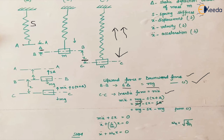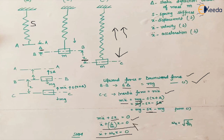What we are left with is m×x-double-dot (mass into acceleration). Taking the restoring force to the other side makes it positive, giving spring stiffness into displacement equal to zero. Taking m as common gives the equation of SHM. Comparing the two equations, the natural frequency comes out to be the square root of S upon m — the same for both vertical and horizontal spring-mass systems.